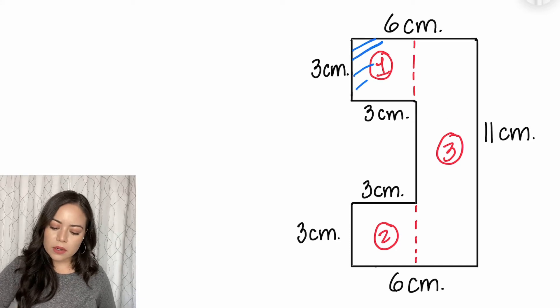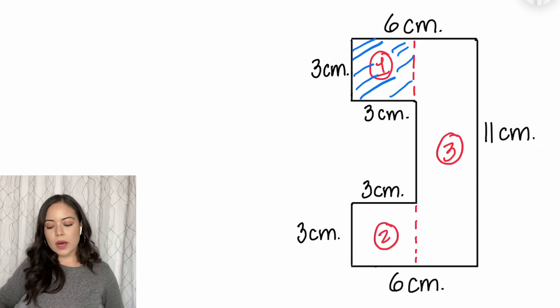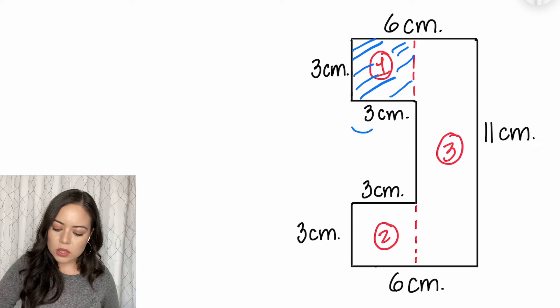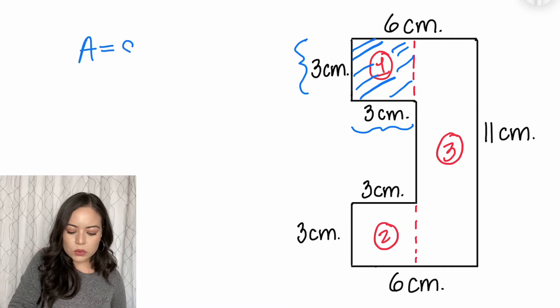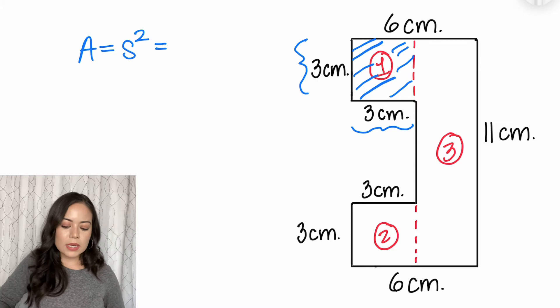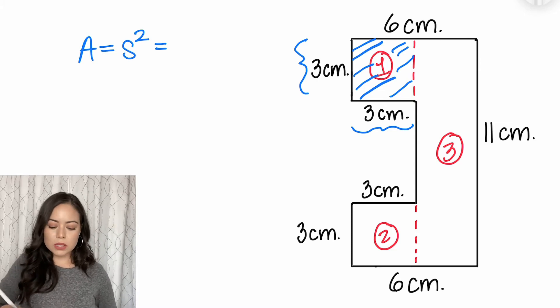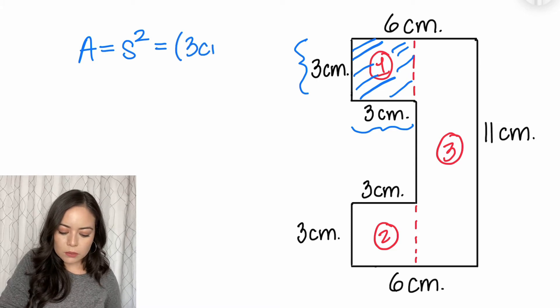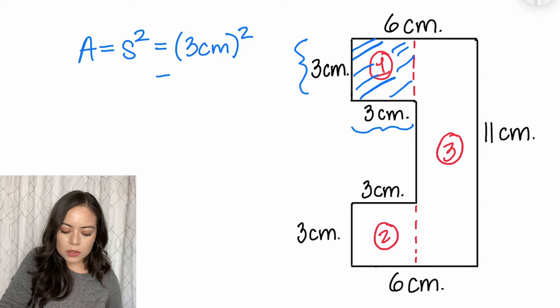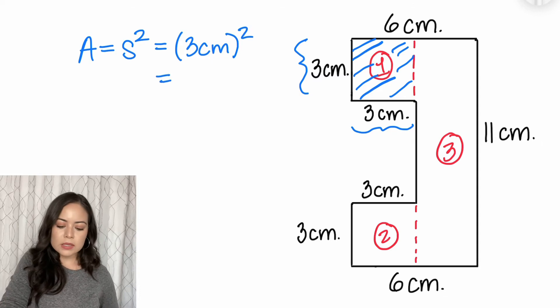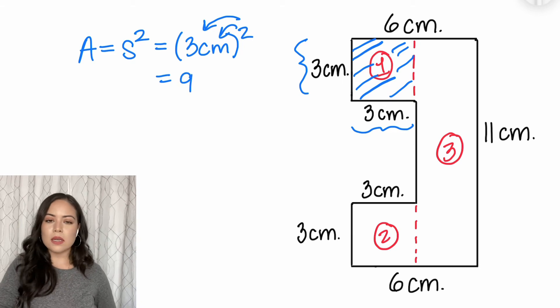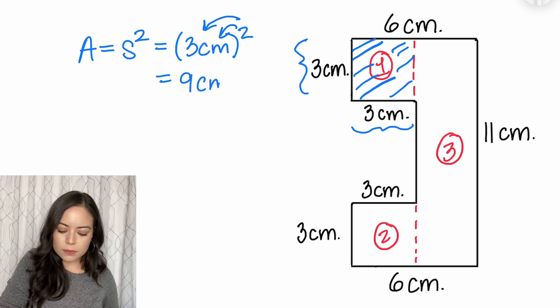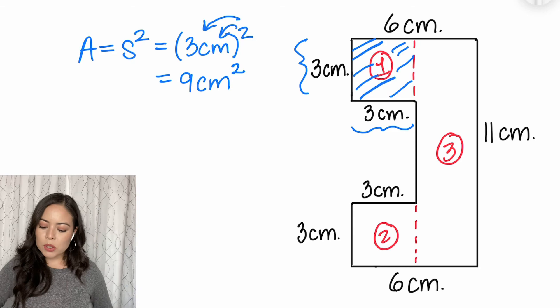First, I'll find the area of this square. So that square, if you can see, has dimensions three by three. And we know that the area of a square is equal to side squared. And each side is three centimeters. So I will put three centimeters in the parentheses. I'm going to square everything inside. So three squared is nine, and centimeters squared is just centimeters squared.